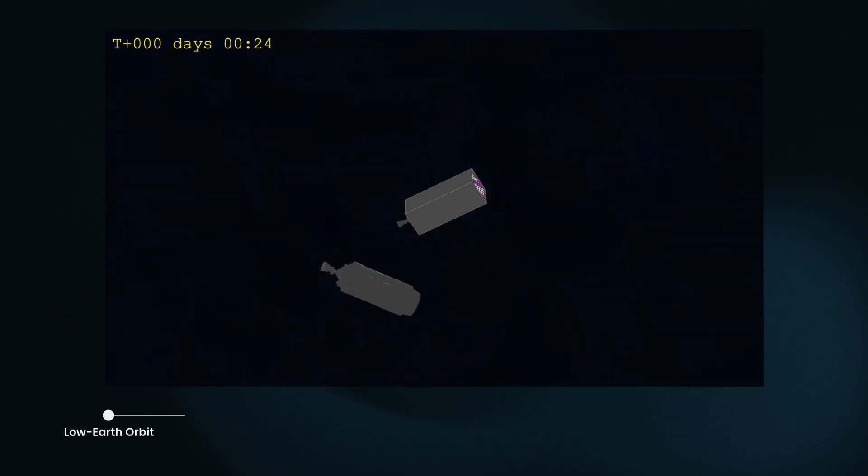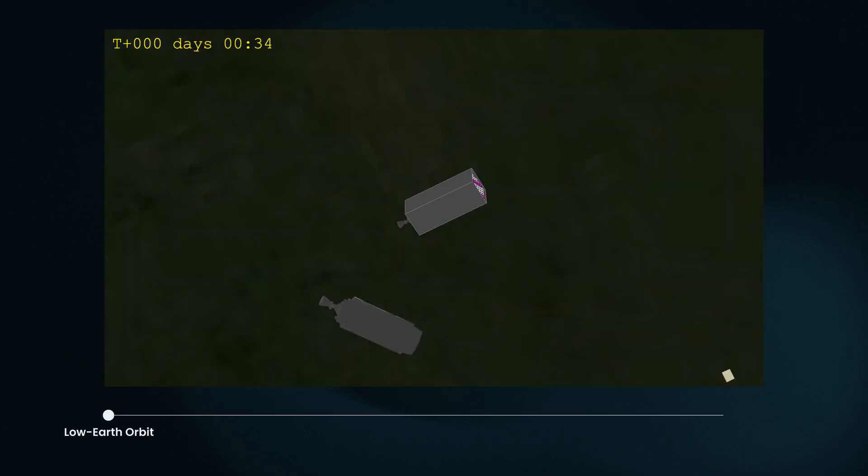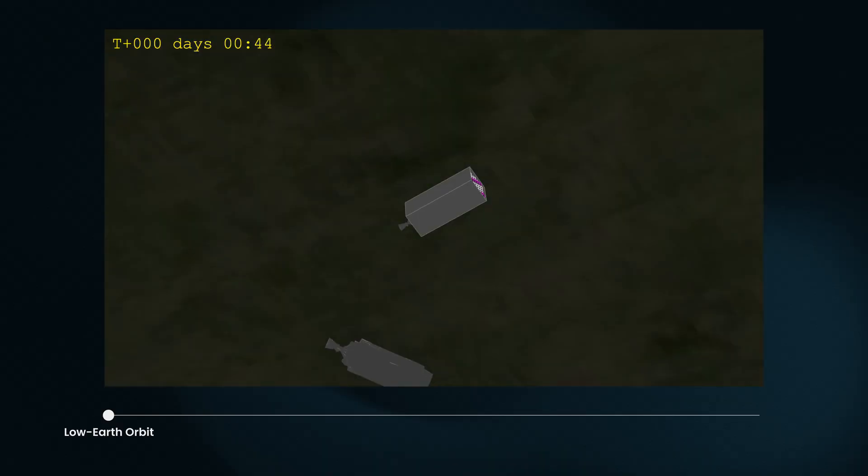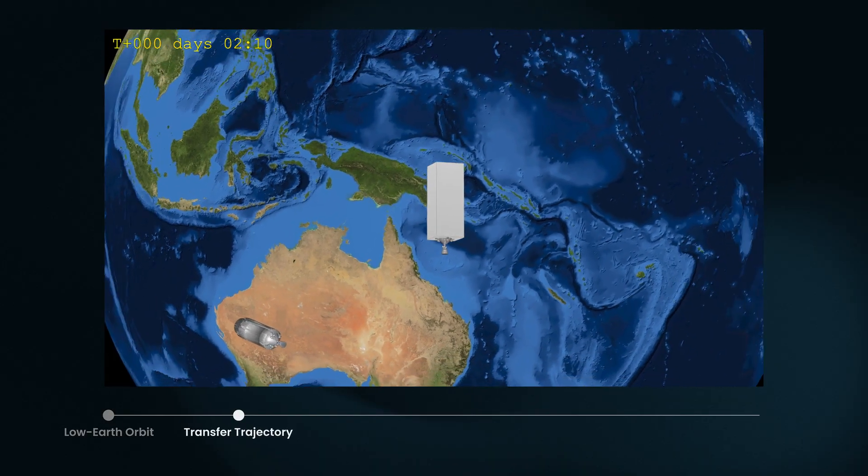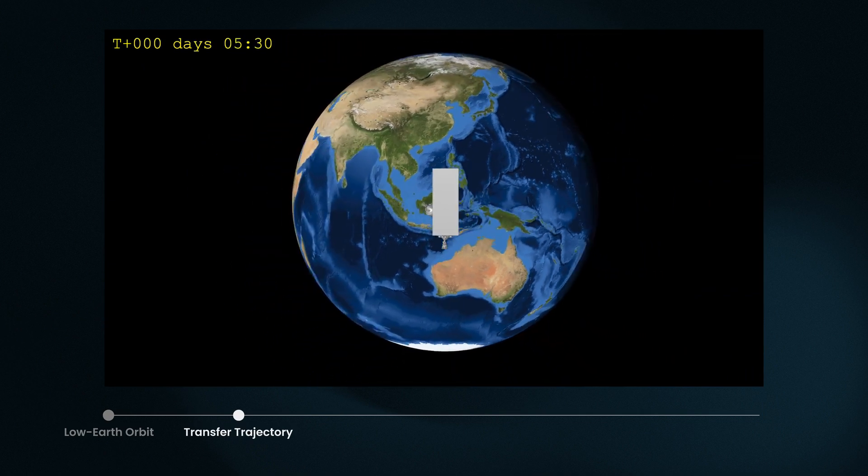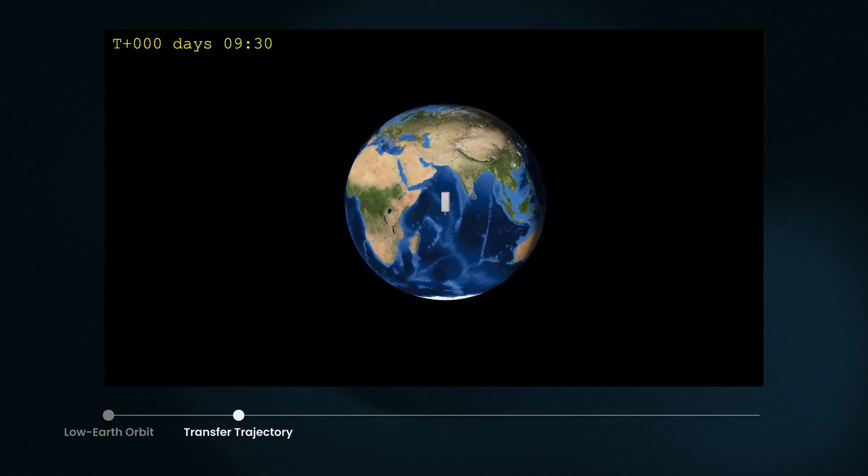GOLO will first be delivered to low Earth orbit via a series of super heavy lift vehicles. From there, large transfer stages will propel GOLO from low Earth orbit into an interplanetary trajectory. The voyage will take about a year to travel the nearly 100 million mile distance.